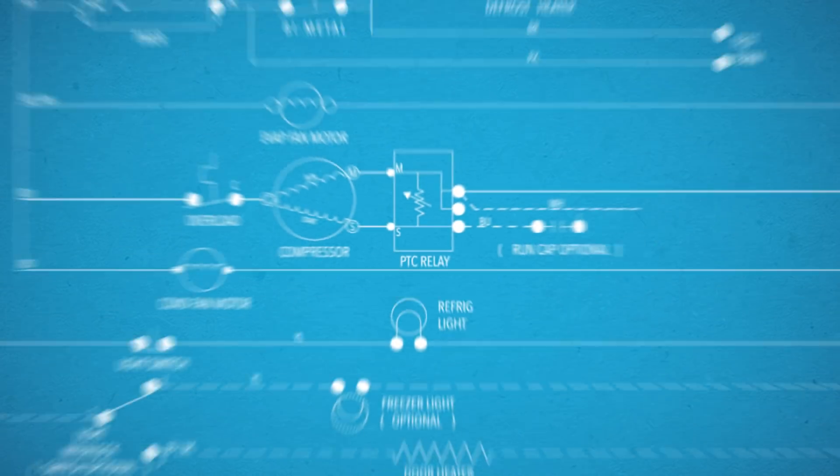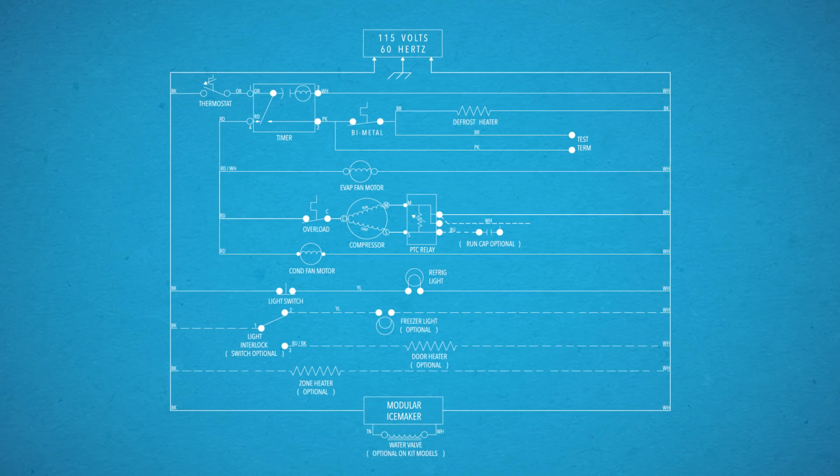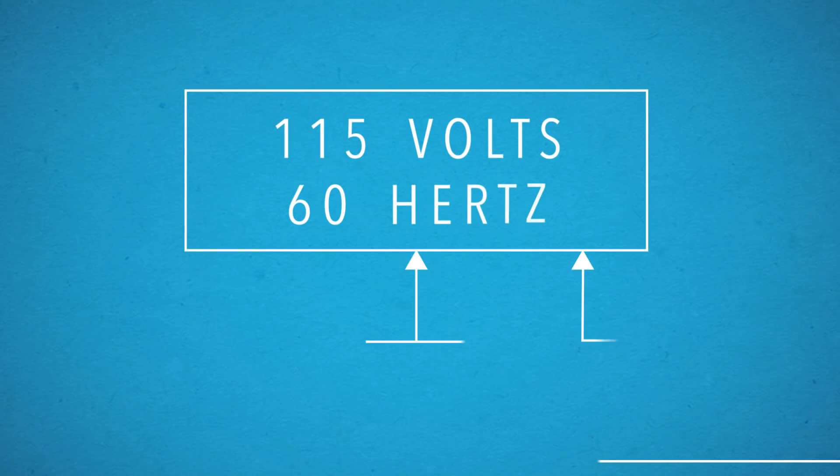Once you've found the wiring schematic, you'll need to know how to decipher all those lines and symbols. The lines represent wires that connect electrical components in the appliance.